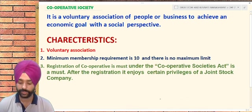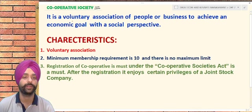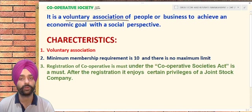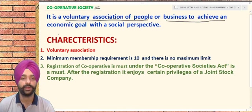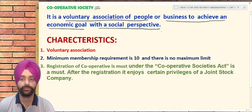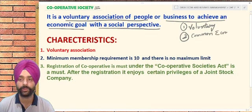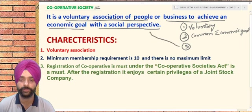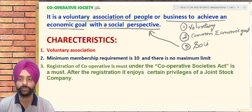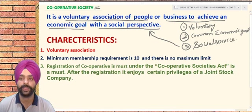The last form of business organization is cooperative society. A cooperative society is a voluntary association of people or businesses to achieve an economic goal with a social perspective. Key points to remember: first, it is a voluntary form of organization; second, members must achieve a common economic goal; and third, the most important aspect is social service — they have to serve society in some manner.